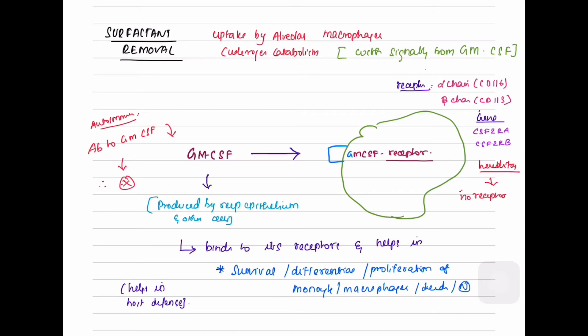Role of alveolar macrophages in surfactant removal: the surfactants are phospholipids produced by the pneumocytes that prevent the collapse of alveolar walls during expiration. Another function of alveolar macrophages is to remove the excess surfactant and thus maintain homeostasis. For removal of surfactant, the alveolar macrophages require a signaling molecule known as granulocyte-monocyte colony stimulating factor which is produced by respiratory epithelium.